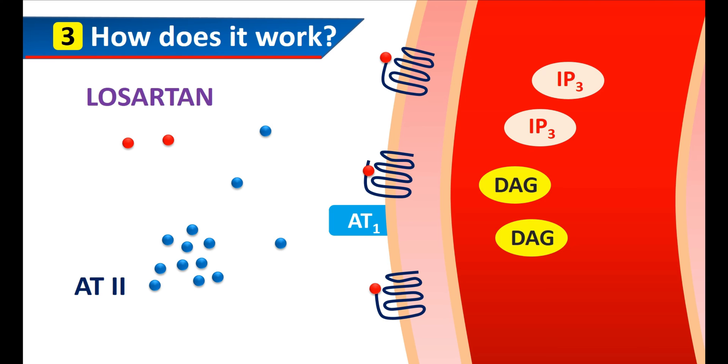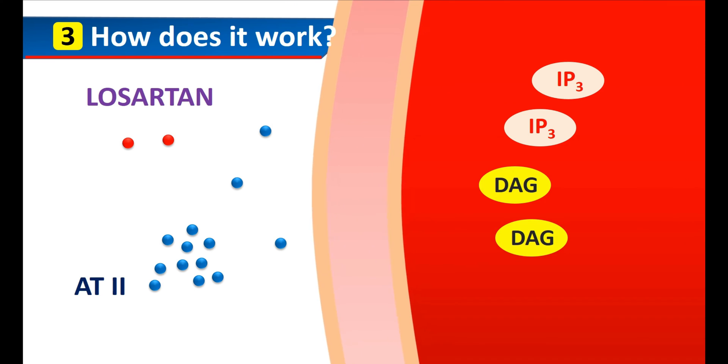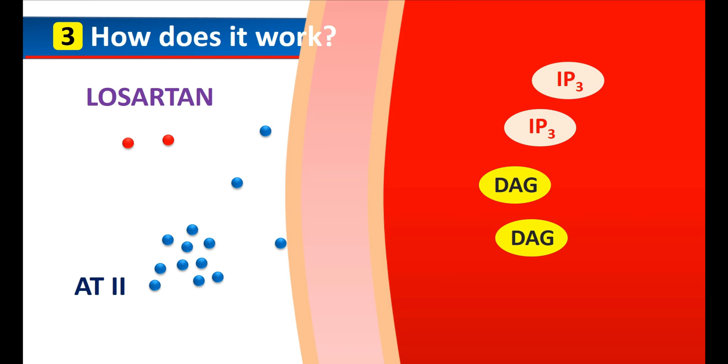This prevents vasoconstriction. As there is no contraction, blood vessels are more dilated, leading to a decrease in blood pressure. In this way, Losartan improves the functions of many organs and reduces the risk of cardiovascular complications.